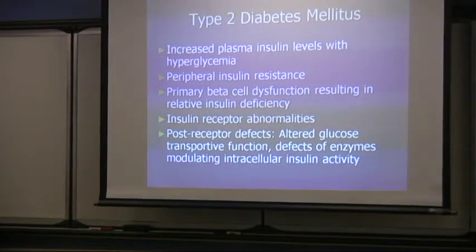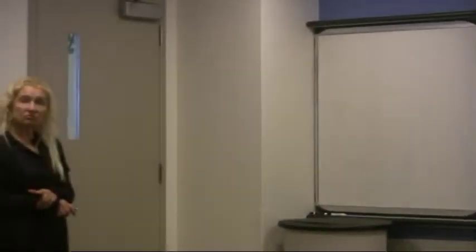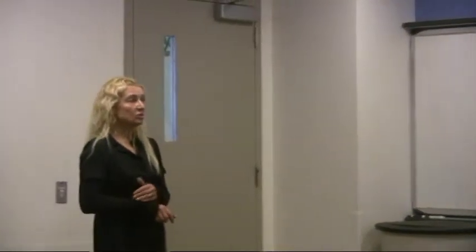In children, the course of type 2 diabetes is not only straightforward insulin resistance. There is also a component of relative insulin deficiency, most likely coming from beta cell dysfunction, as well as potential problems with the insulin receptor, glucose transport pathway, and different cellular insulin activity.